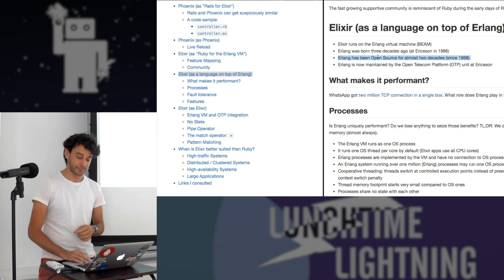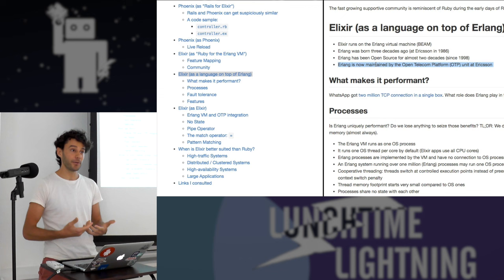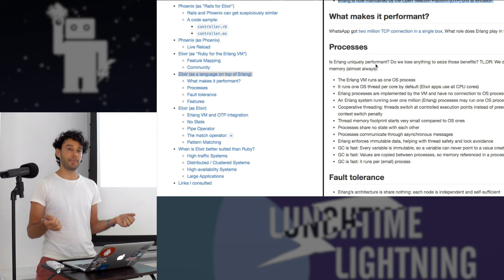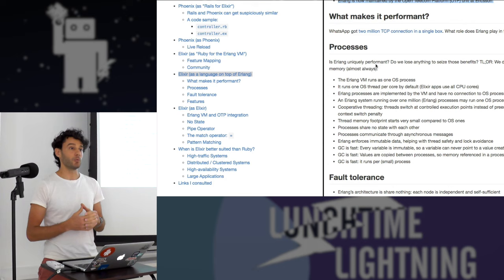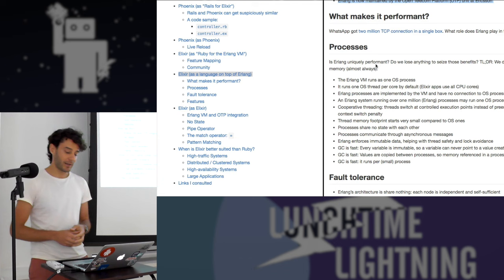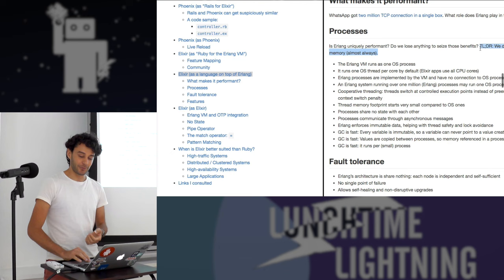The Erlang virtual machine is three decades old. It started at Ericsson, has been open source for about 18 years, and is still maintained by Ericsson — a very healthy open source project. Recently, WhatsApp published a famous blog post saying they got two million TCP connections open on a single box. I wanted to understand what Erlang does to make this possible and why other platforms don't do that as well.